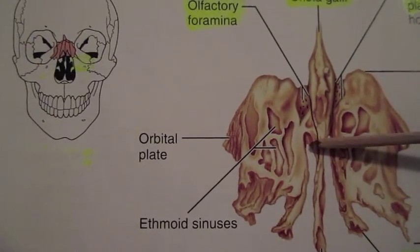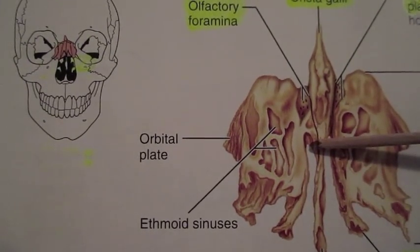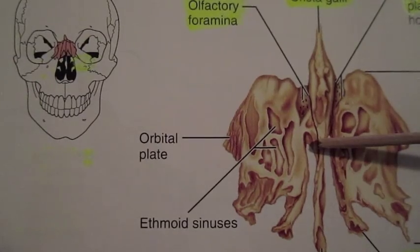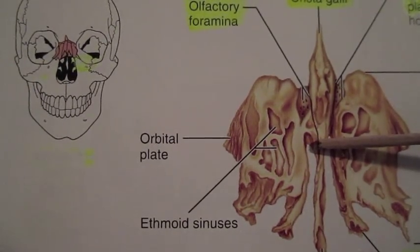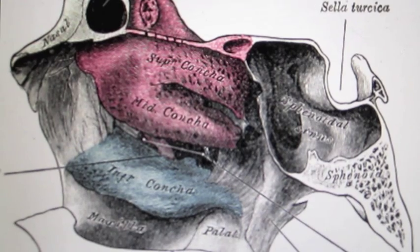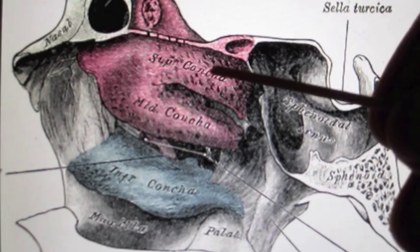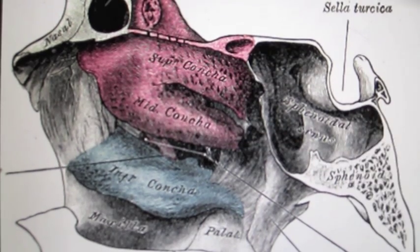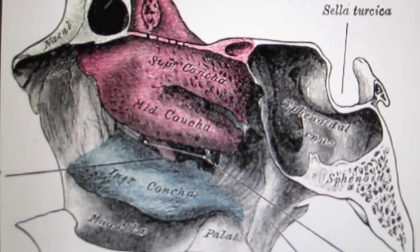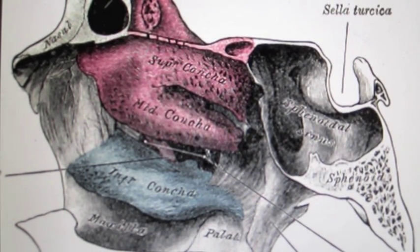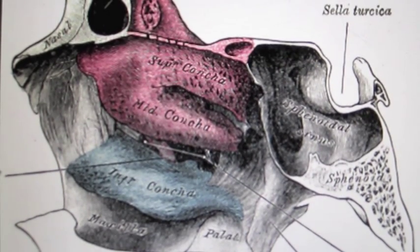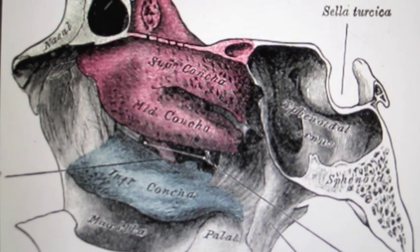The perpendicular plate makes up part of the nasal septum. The septum divides the nose into right and left passages. Each lateral mass of the ethmoid houses the superior and middle nasal concha. The conchae are also known as turbinate bones because they help direct the airflow around the epithelial tissue responsible for filtration, humidification, and warmth of the air that passes through.